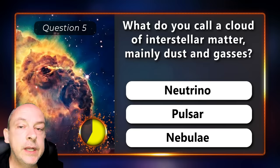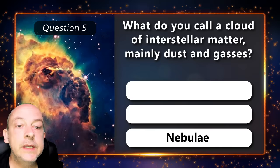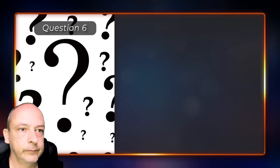What do you call a cloud of interstellar matter, mainly dust and gases? Neutrino, ulcer, or a nebula? It is a nebula.